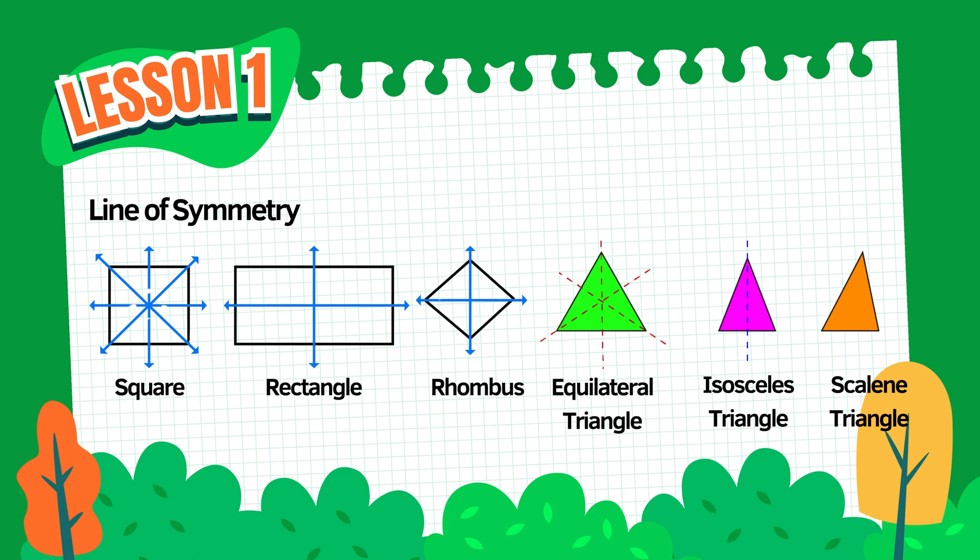But unlike the square, a rectangle does not have diagonal lines of symmetry. A rhombus has two lines of symmetry: one from top to bottom and one from side to side.